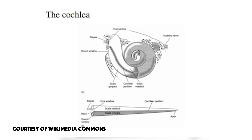The cochlea contains an elastic partition called the basilar membrane, which splits the cochlea into an upper and lower part. You can remember the name basilar membrane because it serves as the base, or the ground, upon which the vital hearing structures are located.